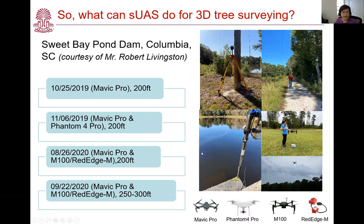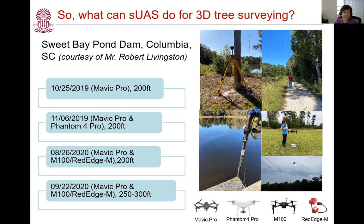Sweet Bee Pond Dam is a private dam in Southwest Columbia. Our team made four flight missions in the past two years. We tested three drones: a Mavic Pro, Phantom 4 Pro, and Matrice 100. We tried both regular cameras and a multi-spectral sensor, the RedEdge-M, on board these drones. Ground control points were collected using a survey-grade GNSS.